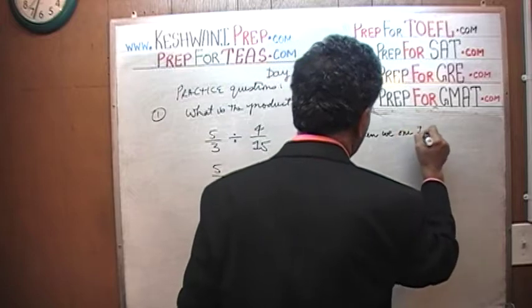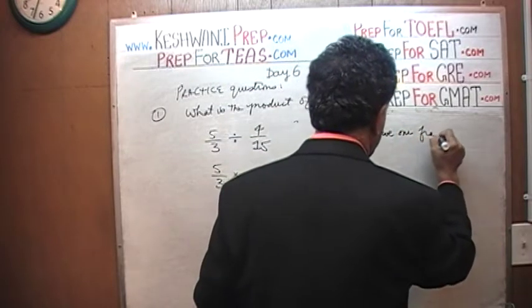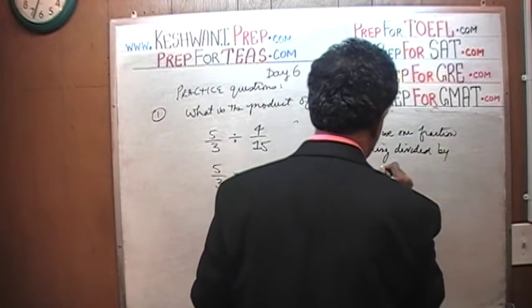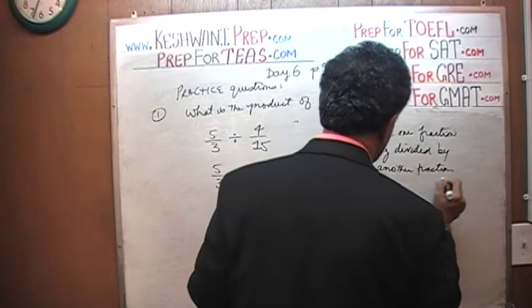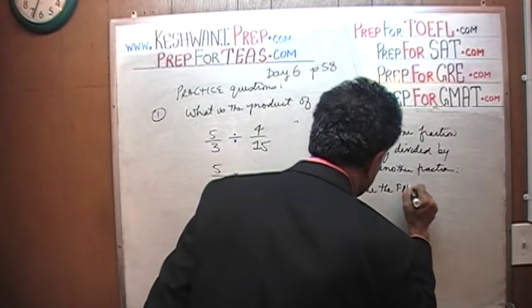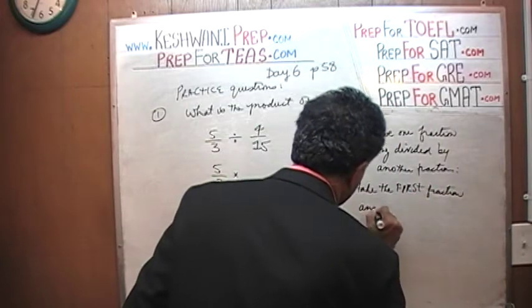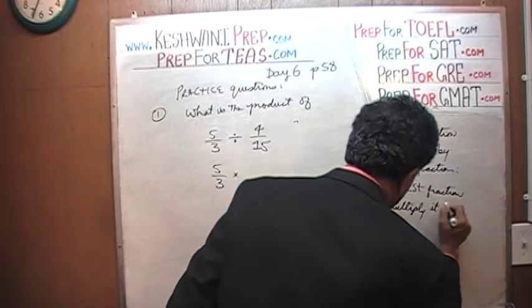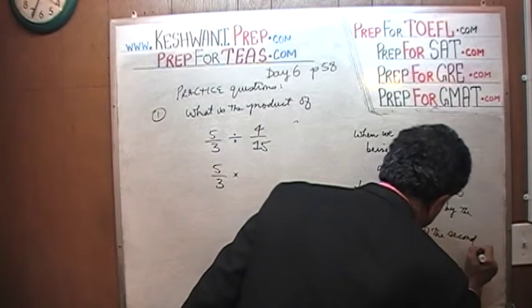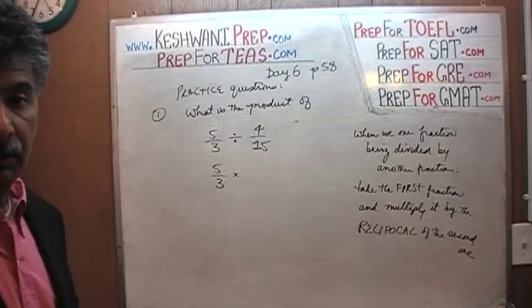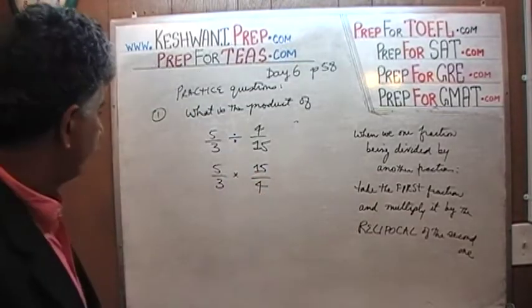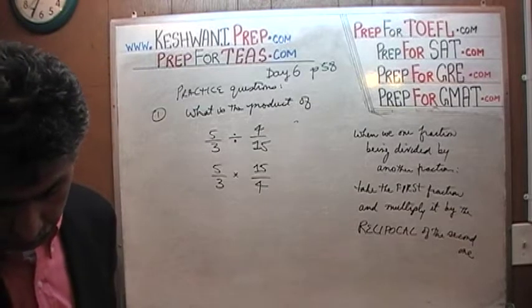When one fraction is divided by another fraction, we take the first fraction and multiply it by the reciprocal of the second one. Reciprocal is just a fancy way of saying turn it upside down. So four-fifteenths turned upside down becomes fifteen over four — and that's all there is to it.